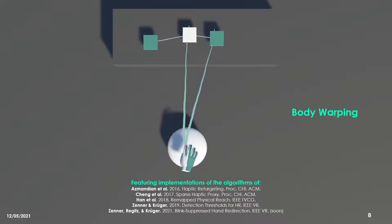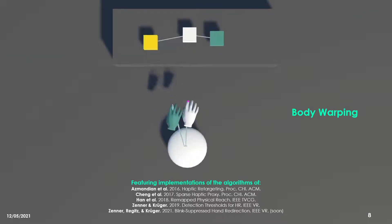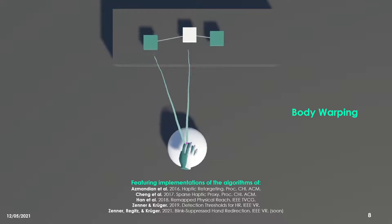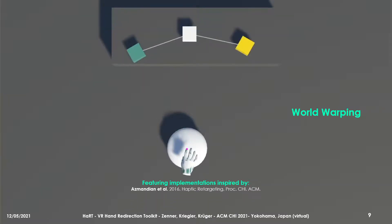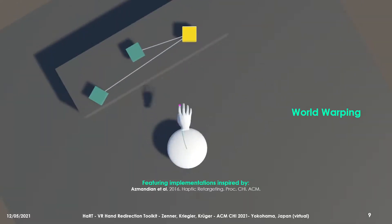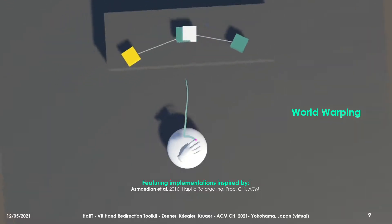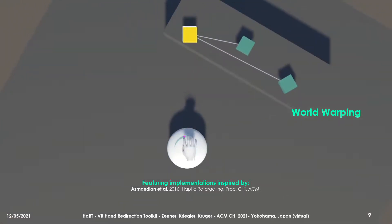Each pre-implemented technique is represented by its own script and ships with the Unity package. The toolkit supports a variety of different hand redirection concepts and offers implementations of several previously published body warping techniques, which offset the user's virtual hand rendering from the tracked physical hand location during a reach, as shown in this video. Besides body warping, the toolkit also supports world warping techniques that maintain a one-to-one hand mapping and rely on translational or rotational manipulations of the virtual environment, injected, for example, during rotations of the user's head.